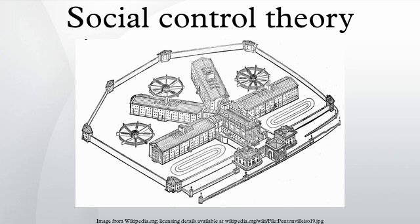Youth may be directly controlled through constraints imposed by parents, limiting the opportunity for delinquency, as well as through parental rewards and punishments. However, they may be constrained when free from direct control by their anticipation of parental disapproval, or through the development of a conscience, an internal constraint on behavior. The focus on the family as a source of control was in marked contrast to the emphasis on economic circumstances as a source of criminogenic motivation at the time. Although he acknowledged motivational forces, he adopted a control theory position when he proposed that most delinquent behavior is the result of insufficient social control.